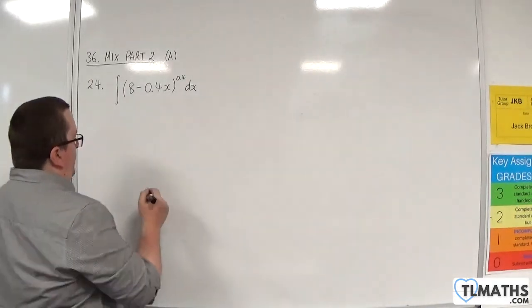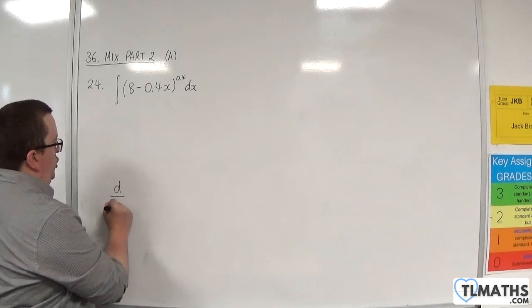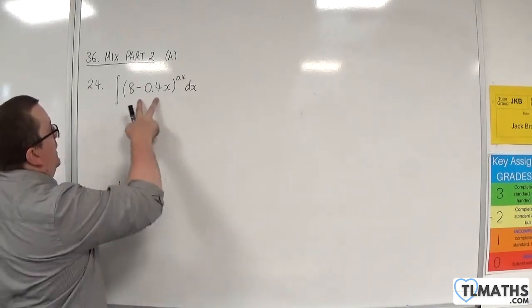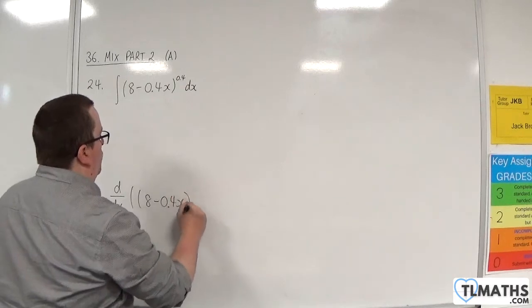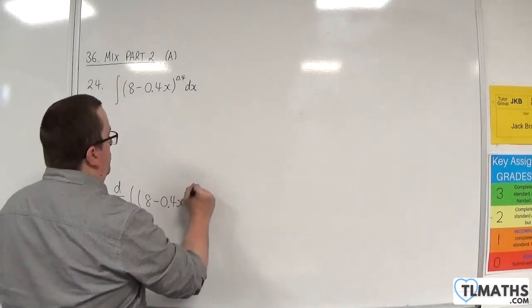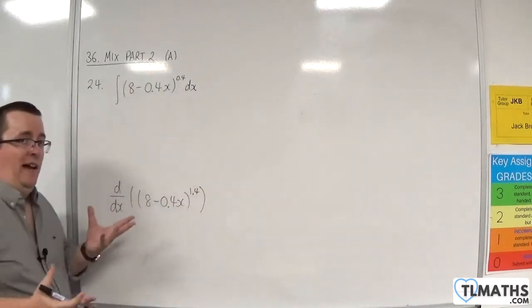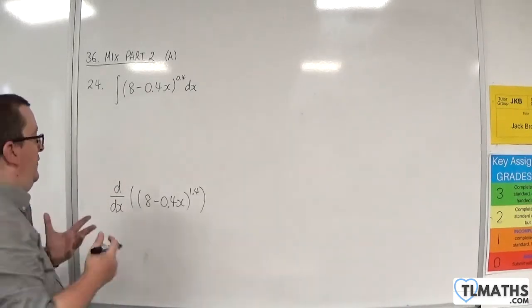So what you want to do is you want to think about differentiating the 8 take away 0.4x with 1 added to the power, because you know that at some point I'm going to have to add 1 to the power. So let's see what we get.